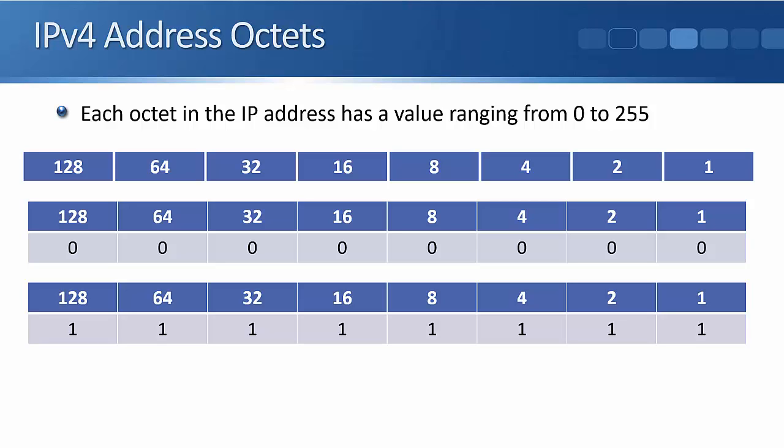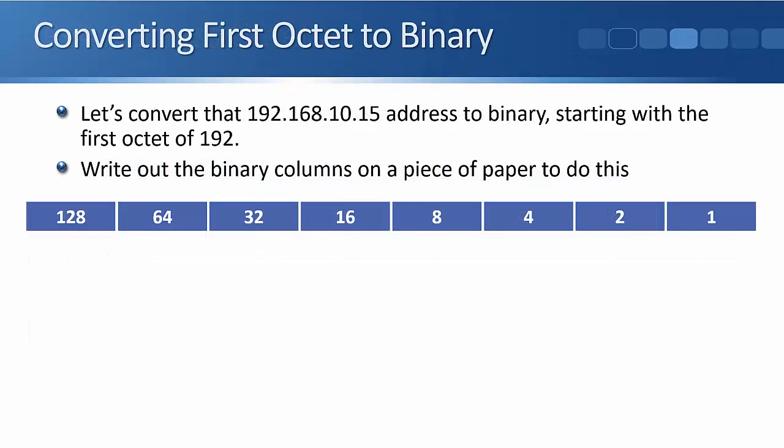On each of those octets, the bit pattern can be any combination you want of 1s and 0s. It goes from 0 at the lowest value up to 255 at the highest value. The example IP address I gave you earlier was 192.168.10.15 in dotted decimal notation. Let's convert that to binary.